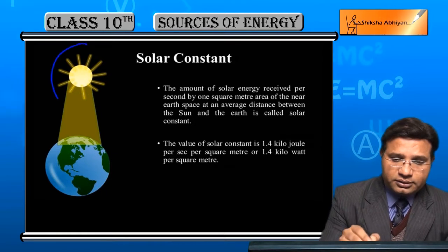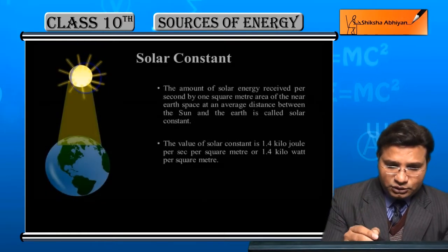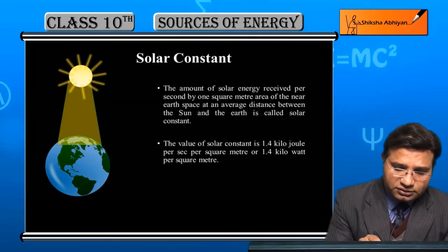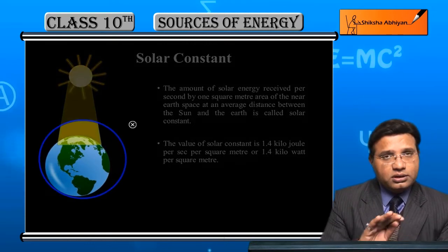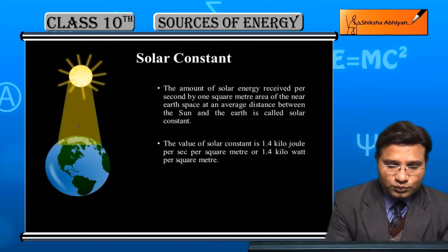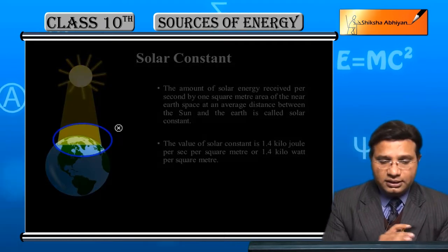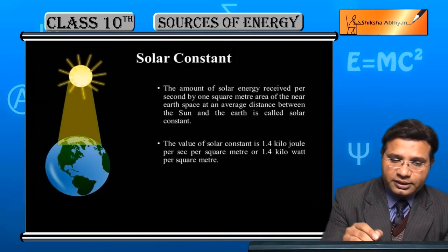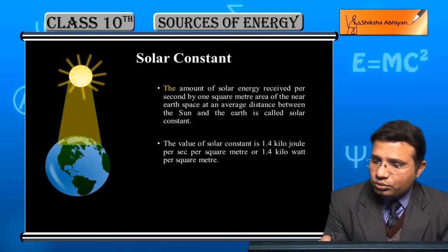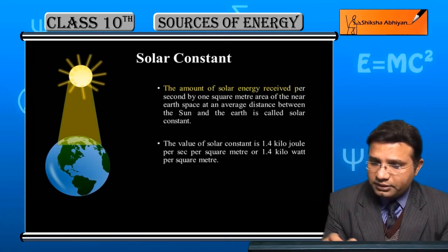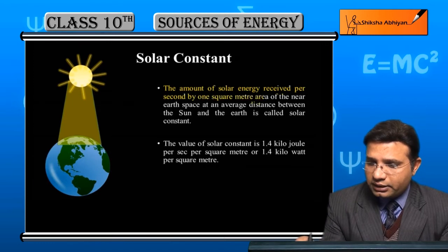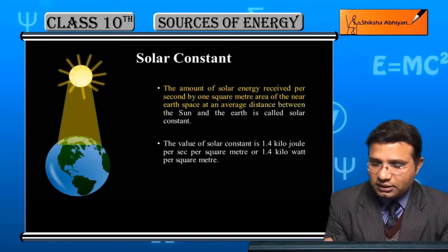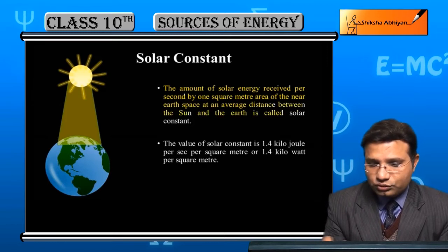This is the Sun. Now, the sun's heat rays or light rays are incident on Earth, and Earth's section which you can see is heated up. On this basis, we will define solar constant. So, the definition: the amount of solar energy received per second by one square meter area of the near-Earth space at an average distance between the sun and the Earth is called solar constant.